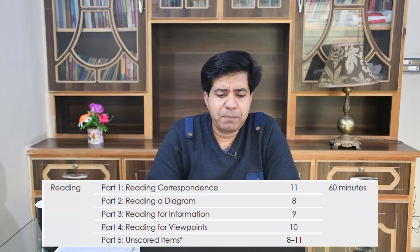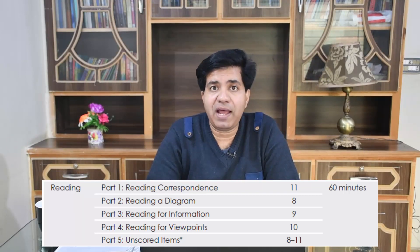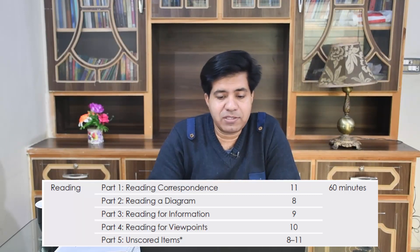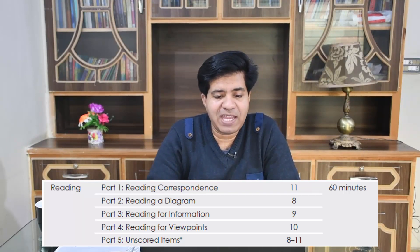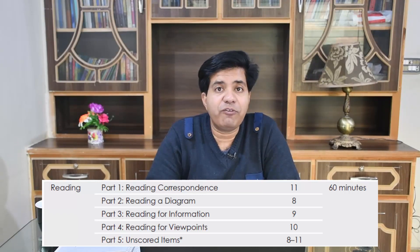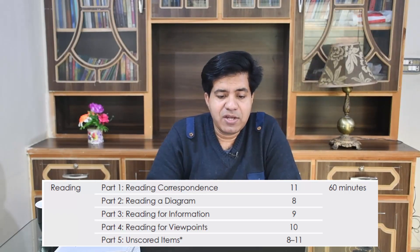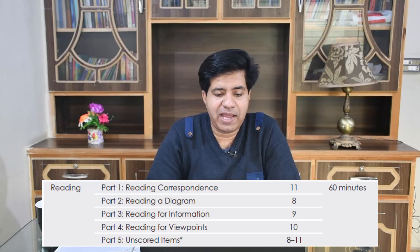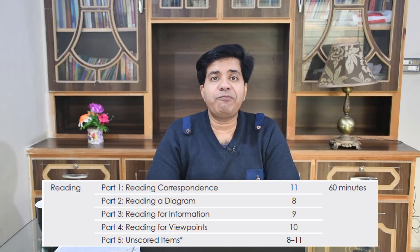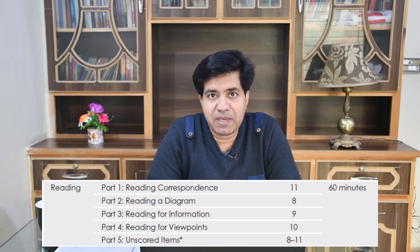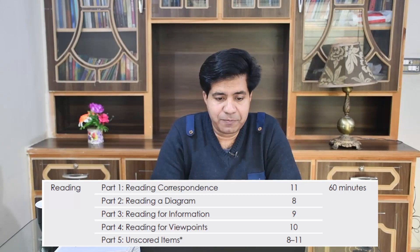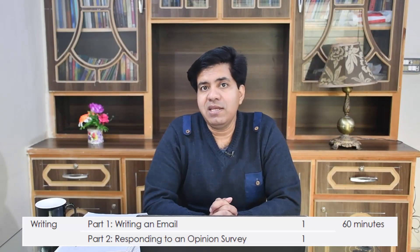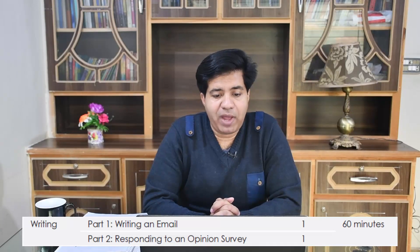Part two is reading to apply a diagram — this should be eight minutes. Then reading for information — you should spend nine minutes on that. Reading for viewpoints — you can spend 10 minutes on that. So there are five components in CELPIP reading.